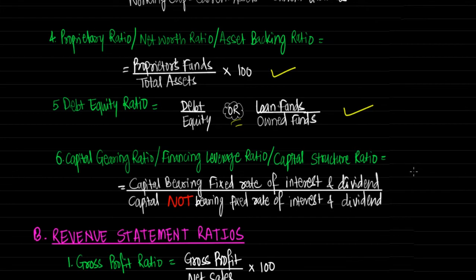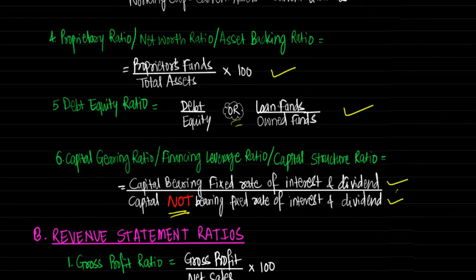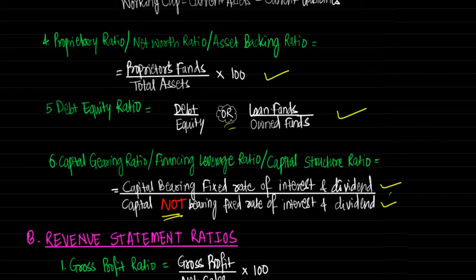Next is capital gearing ratio, also called financing leverage ratio or capital structure ratio. It is calculated as capital bearing fixed rate of interest and dividend divided by capital not bearing fixed rate of interest and dividend. Capital bearing fixed rate includes preference share capital, debentures, loans, etc. Capital not bearing fixed rate includes equity share capital, reserves and surplus, fictitious assets and accumulated losses. Its significance is that it shows the balance between debt and equity and whether a company is practicing trading on equity. These are the major balance sheet ratios.